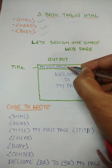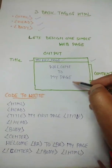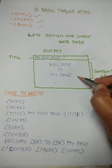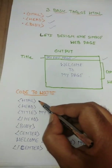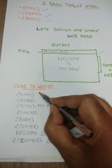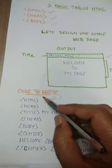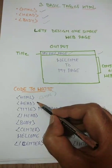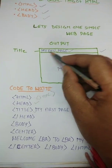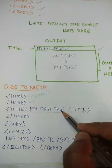Let's design one simple web page. I have drawn one output — the title is 'My First Page' and these are the content of the web page, which looks like a web page when viewed in a browser. To write this, we will use Notepad. The first thing to write is the HTML opening tag, then the head tag, then the title tag. Inside the title, we write 'My First Page', which will appear on the browser screen.